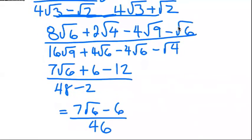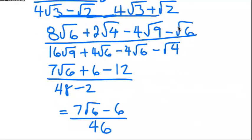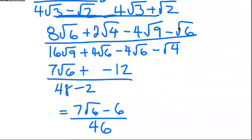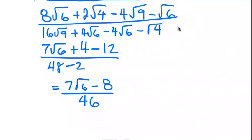I did, though, realize that I made a mistake. 2 square root 4 — square root 4 is 2, and 2 times 2 is 4, so this should be 4. Let's fix that: that should be a 4. So 4 take away 12 is 8, so this should be an 8. Now we're done.